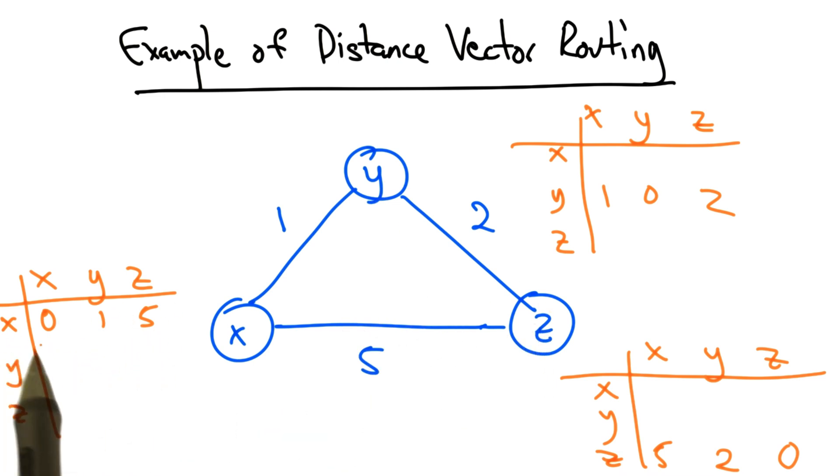For example, the distance between x and x is obviously 0, and the shortest known distance between x and y from x's perspective is 1, the direct path. Similarly, the shortest known distance between x and z to x at the outset is 5, because all it knows is the direct path.